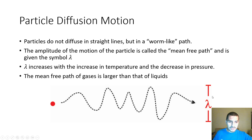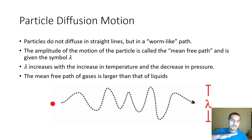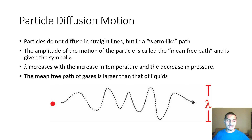Lambda increases as temperature increases, because adding energy increases the amplitude of motion. It decreases with increasing pressure, since high pressure reduces the mean free path. For gases, the mean free path is much larger than for liquids, because gases have huge intermolecular spaces. In liquids, the mean free path is very small and is not significantly affected by pressure and temperature.